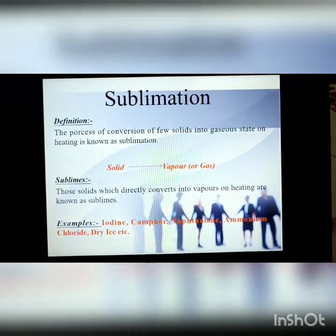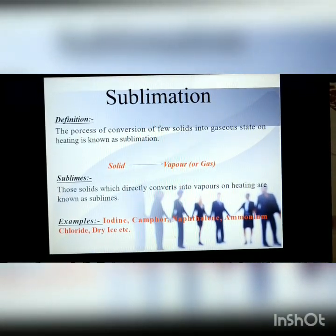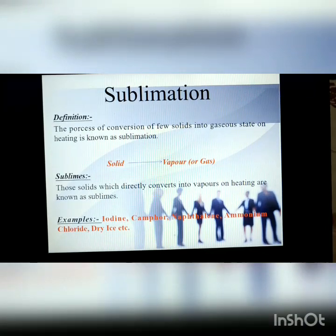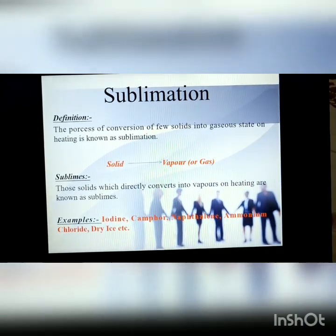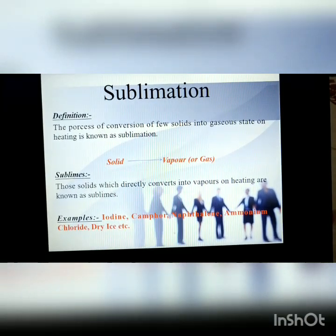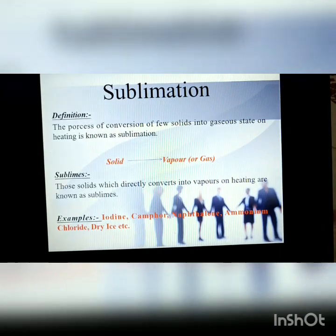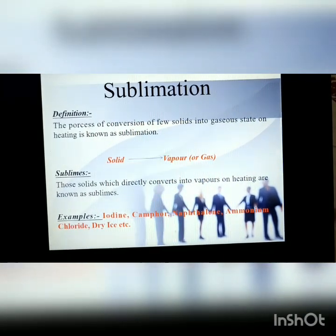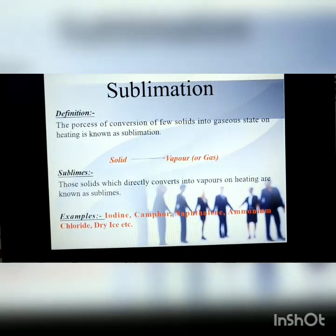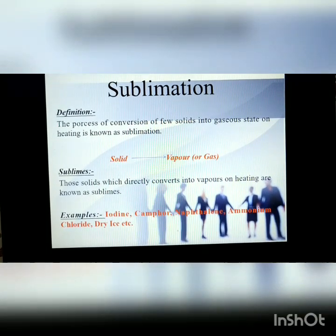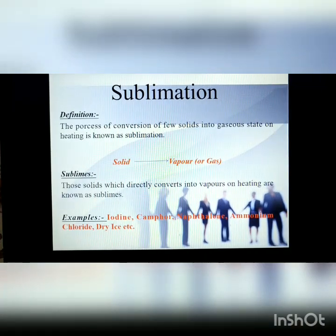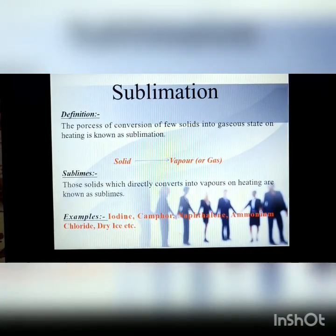For example: iodine; camphor, which is commonly used as kapoor; naphthalene balls, which are used in silk or woollen clothes to protect them from moths or insects; ammonium chloride, a kind of salt; and dry ice, which is also known as solid carbon dioxide — that we will discuss in the next chapter in detail. These are examples of sublimes which on heating directly convert into their vapors and do not convert into liquid but instead directly go into gaseous state.